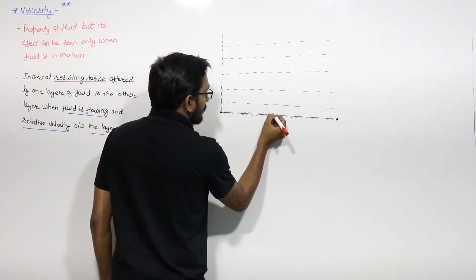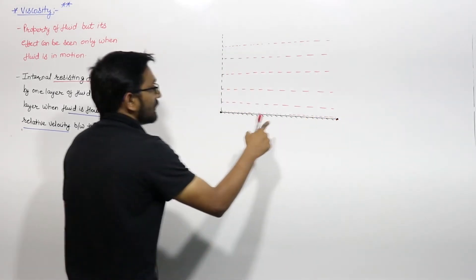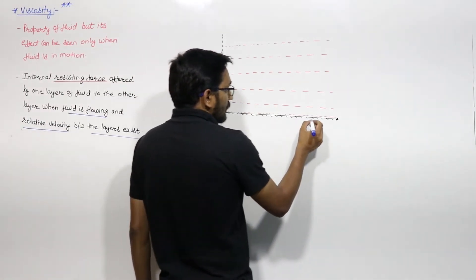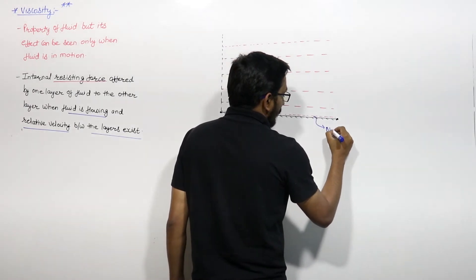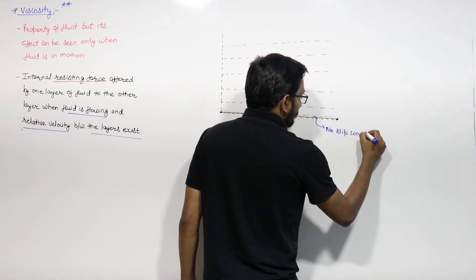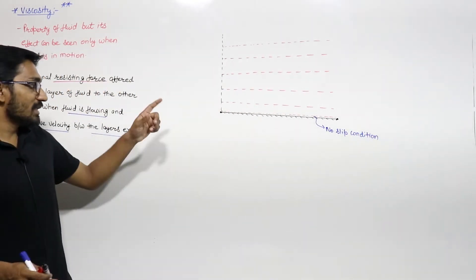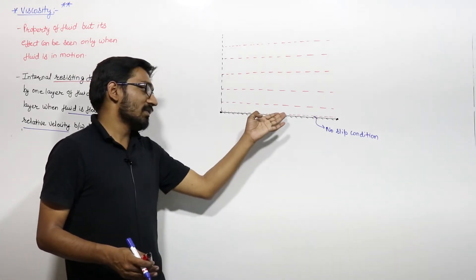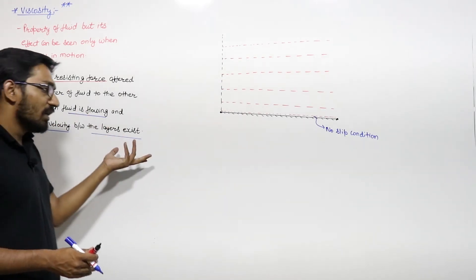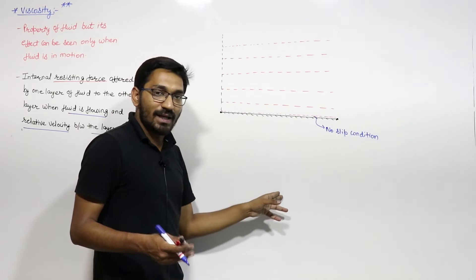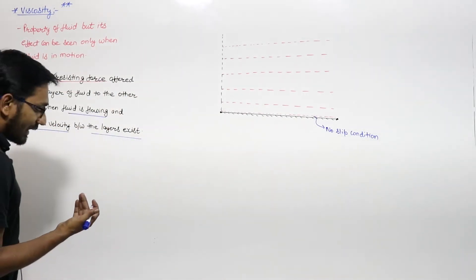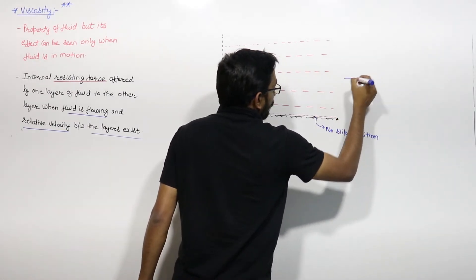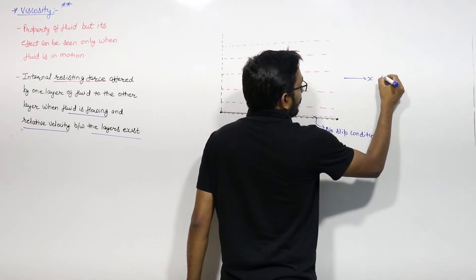There is a layer of fluid in contact with the solid surface. Here exists a condition known as the no-slip condition. The no-slip condition means the velocity of the layer in contact with the solid surface will be the same as that of the solid surface. If the surface is at rest, the velocity of that layer will be zero. The fluid is flowing in the x-direction, and y is the direction perpendicular to the flow.